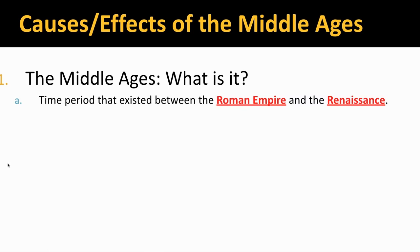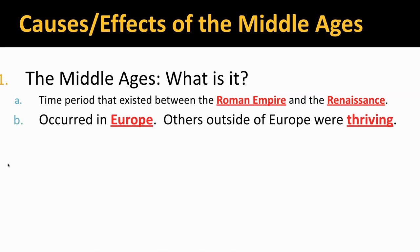Most historians think of the Middle Ages as the time period that existed between the Roman Empire and the Renaissance. One thing we really need to make sure we understand is this is Europe — this is not the whole world. There are many different civilizations that are continuing to thrive. But we know the Romans fell in 476 A.D.